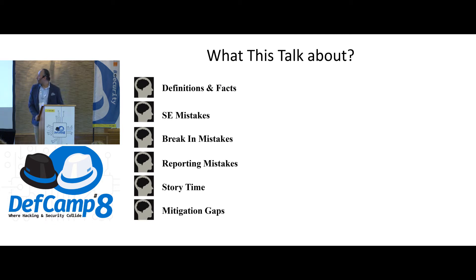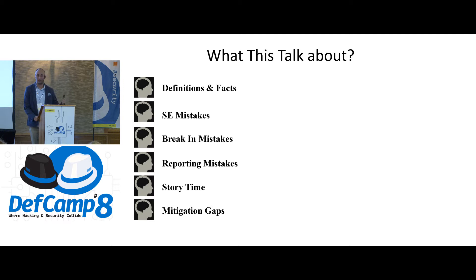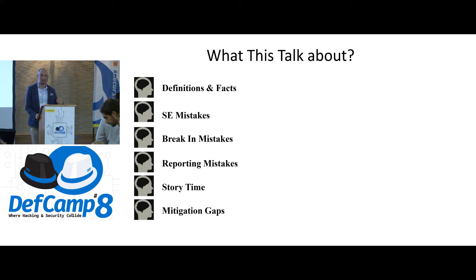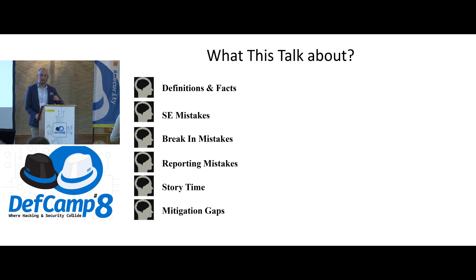Today's talk will cover social engineering mistakes across many phases: reconnaissance, preparation and exploitation, breaking-in mistakes, and reporting mistakes. We'll also have story time and mitigations. We always do awareness for mitigations, but in the end, the same company doing mitigation is being attacked — and we will find lots of mitigation gaps.